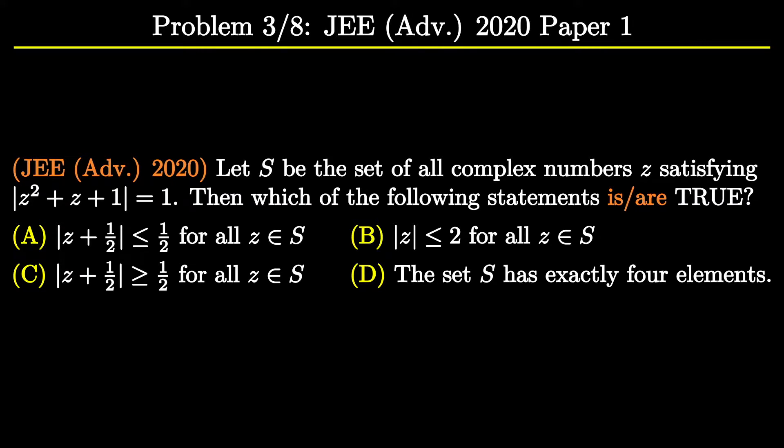Let's read the options carefully. The first and third options are commenting on the values of |z + 1/2|. The second option is commenting on the upper bound of |z|, and the fourth option is commenting on the number of elements in the set S.